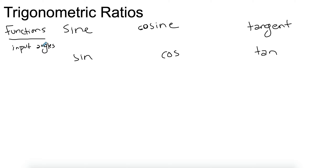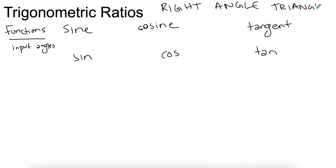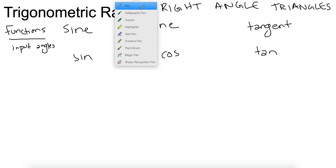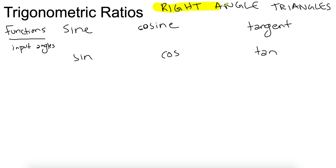In later, more advanced trigonometry, you're going to use sine rule and cosine rule — not the ratios, just the rules — and these are for non-right angle triangles. But in this video, and for trigonometric ratios, you only use right angle triangles. I'm writing it in capitals and highlighting it just so you remember.